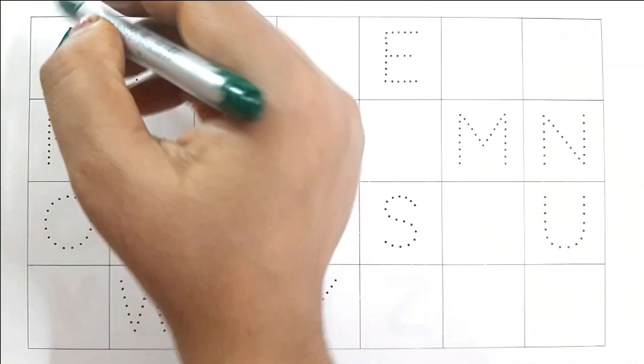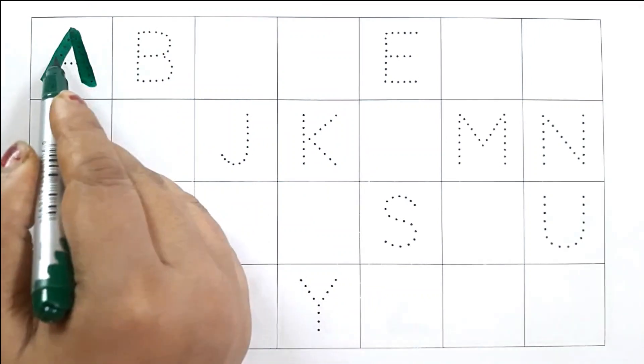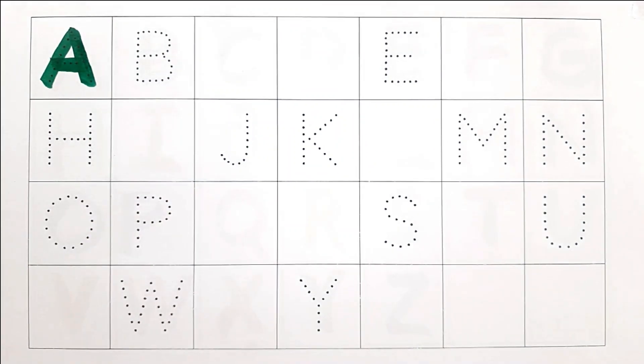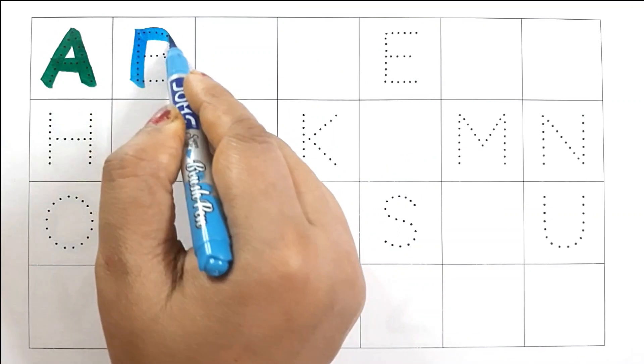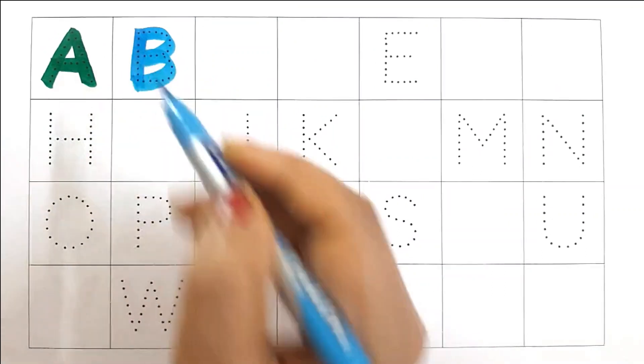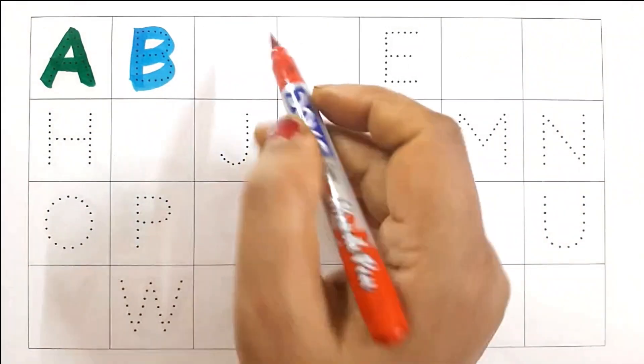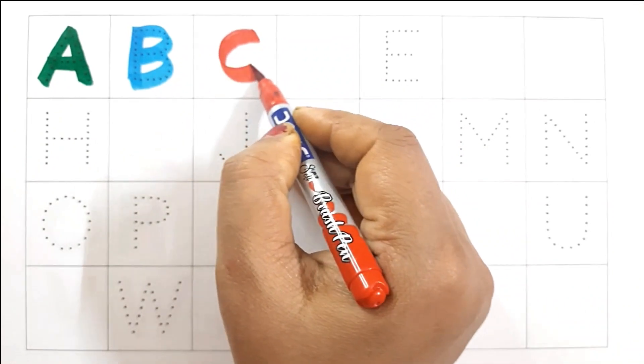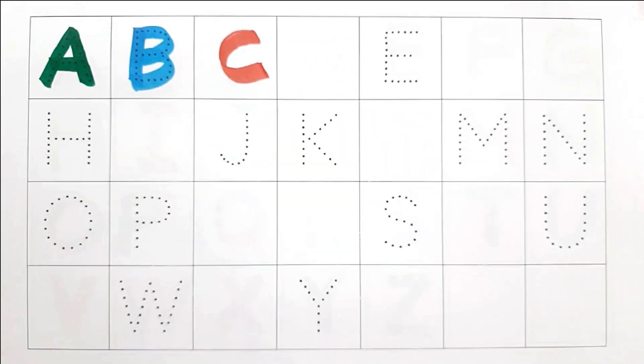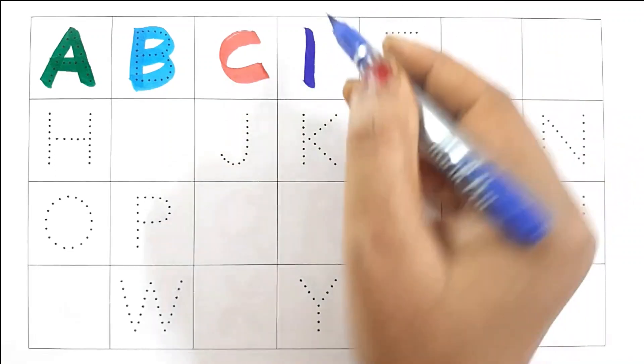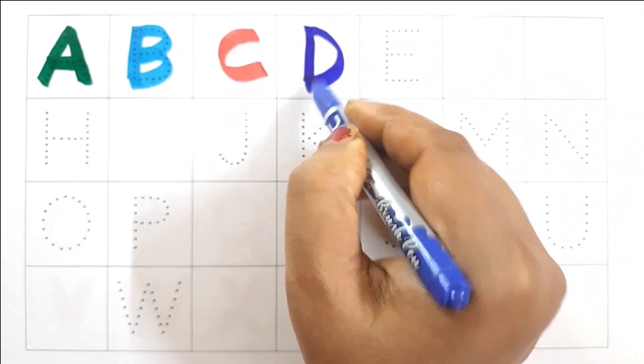A. A for Aeroplane. B. B for Boat. C. C for Car. D. D for Dog.